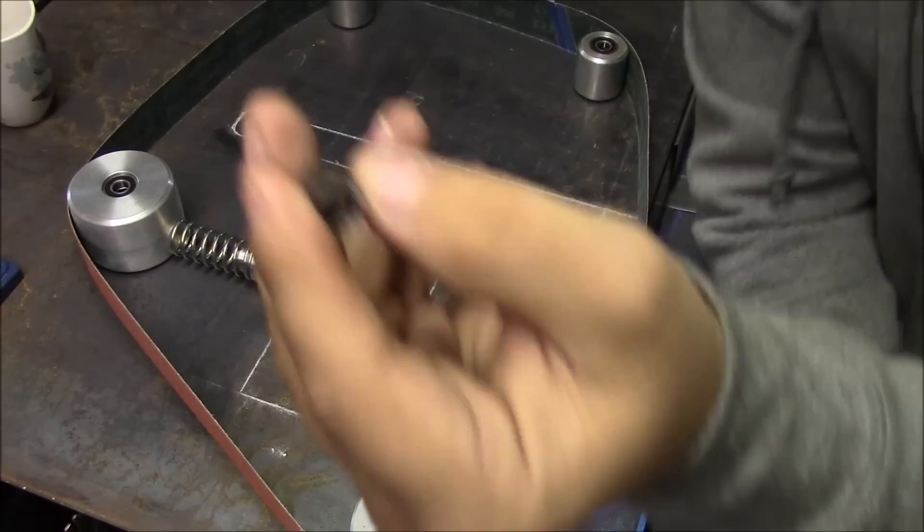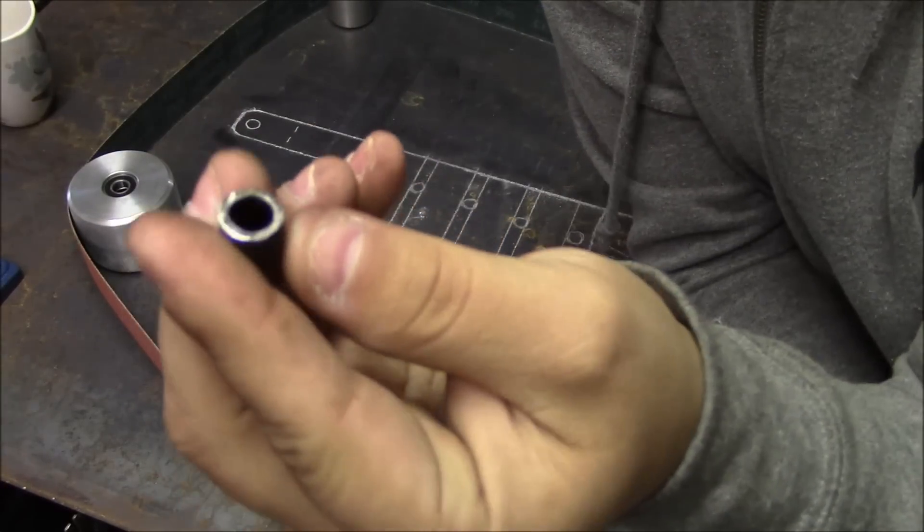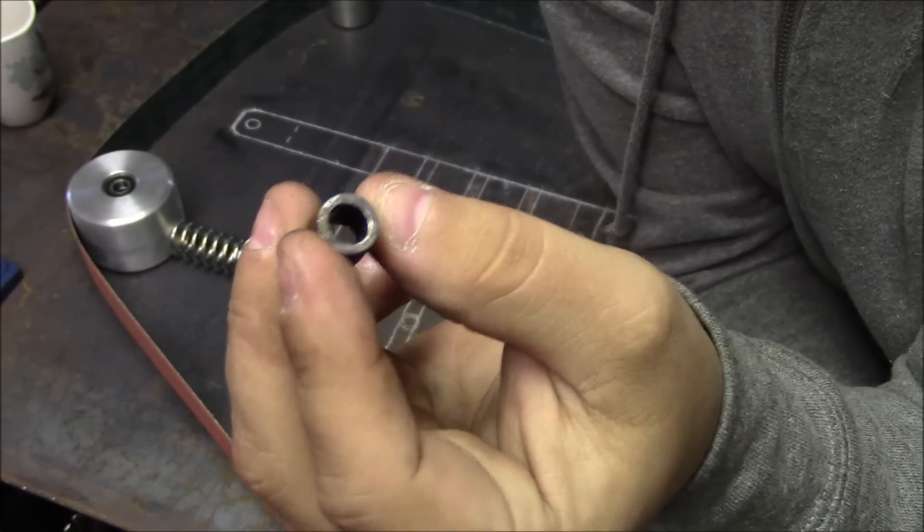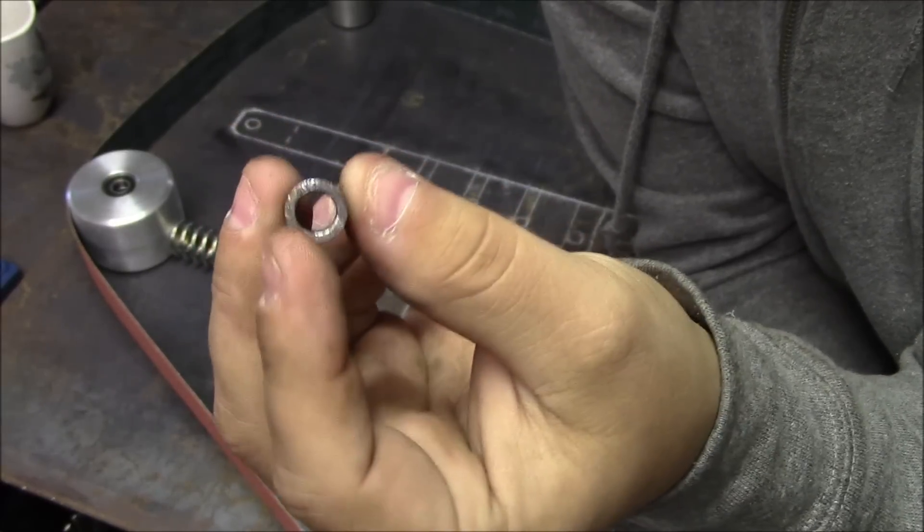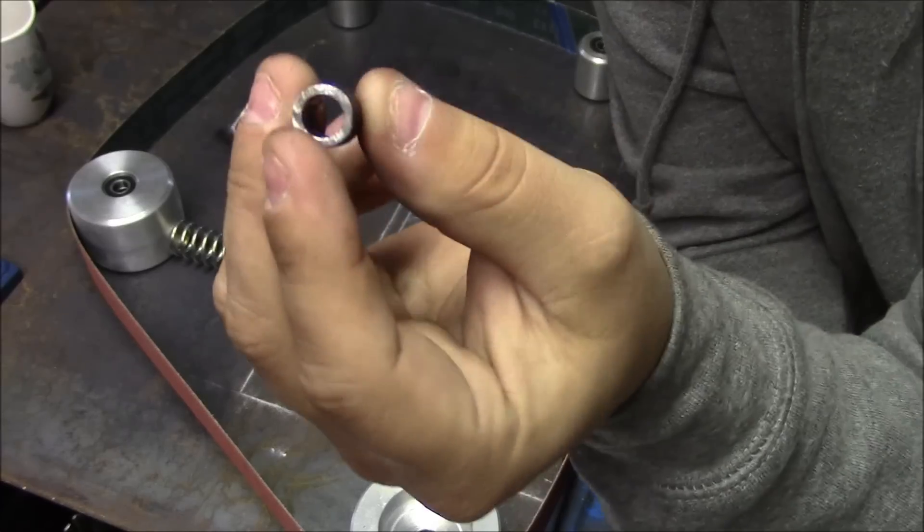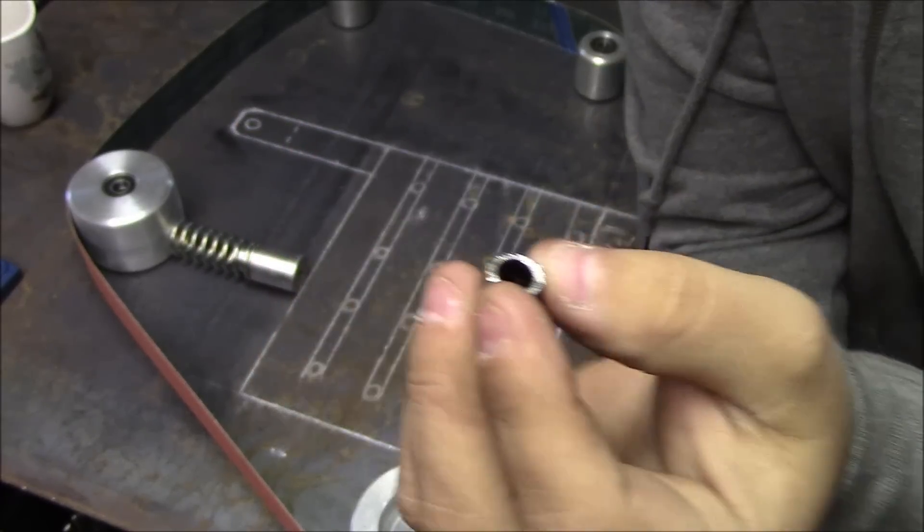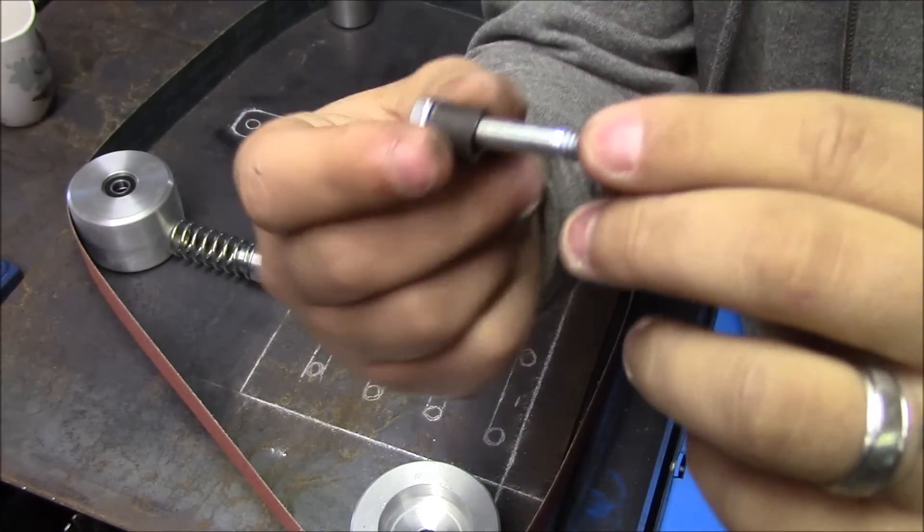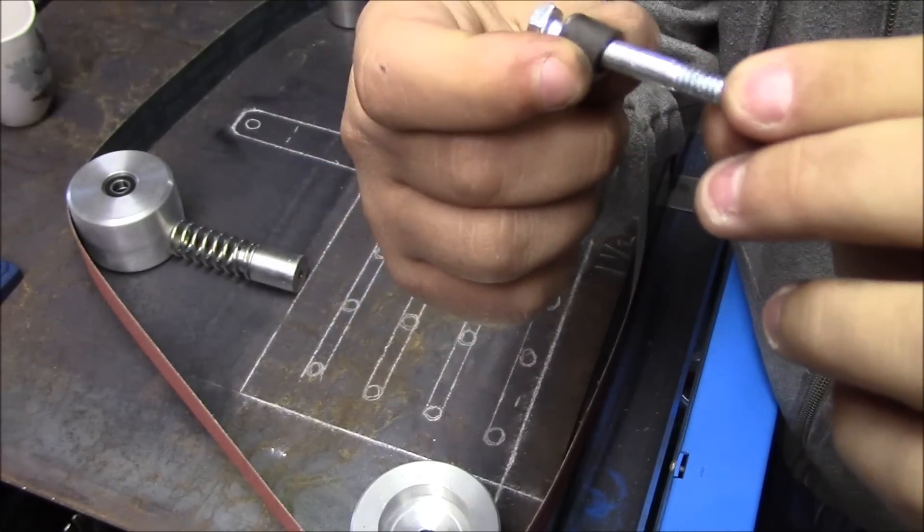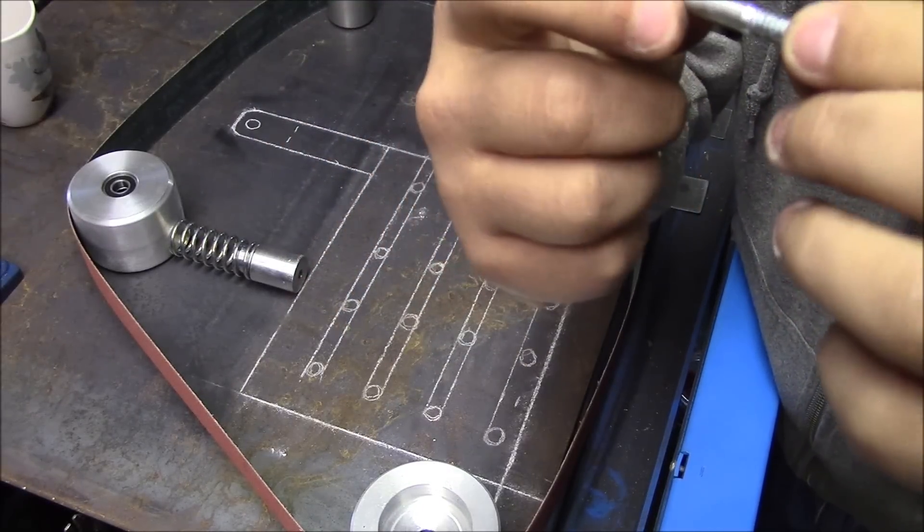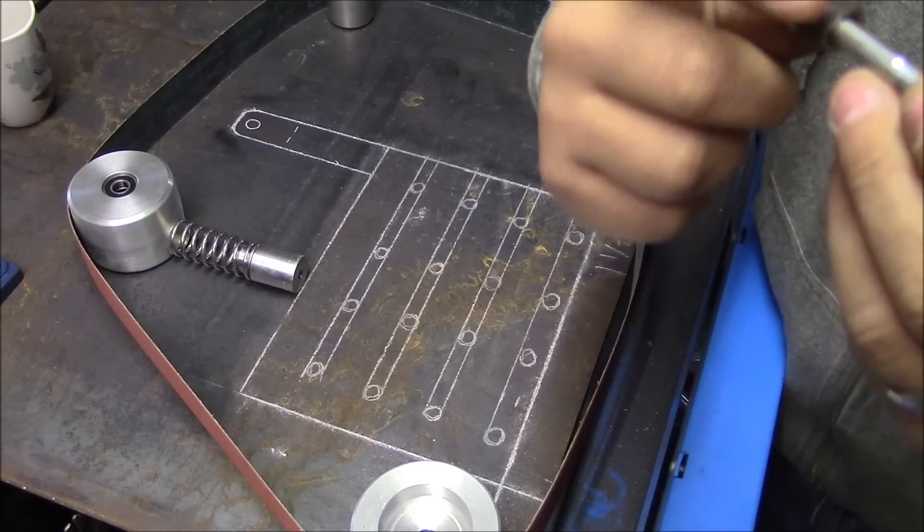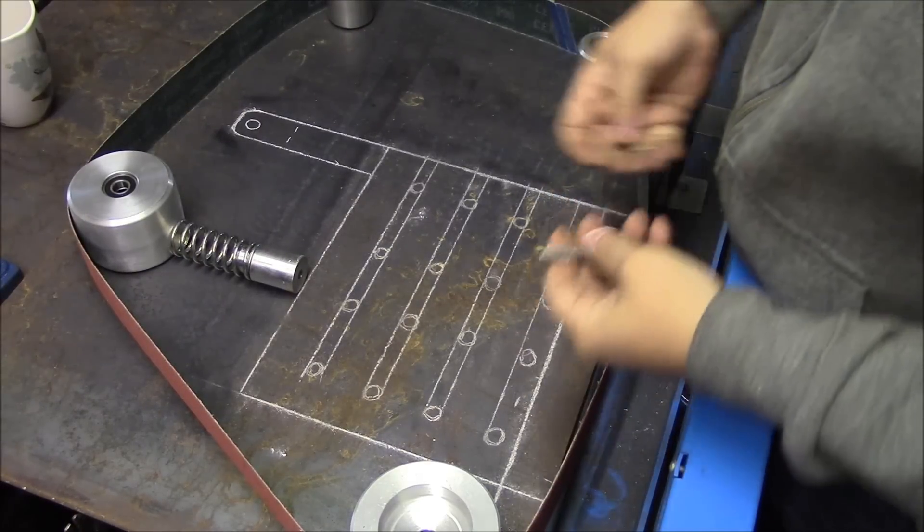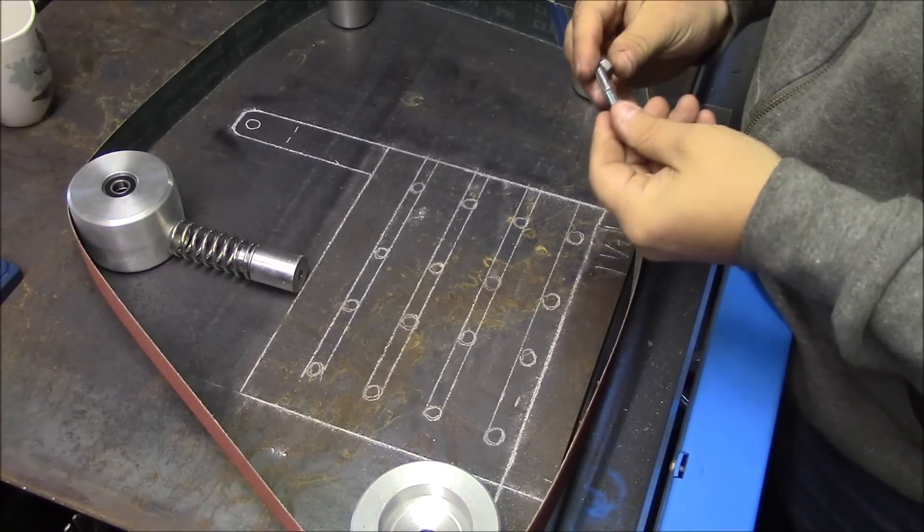I got some of this DOM tubing, it's 7/16 by an 063 or 065 wall, so it's about the closest I could find with that manufacturer that I got my steel from. There is a bit of play on the bolt but it's more of a spacer, and its main purpose is just spacing.